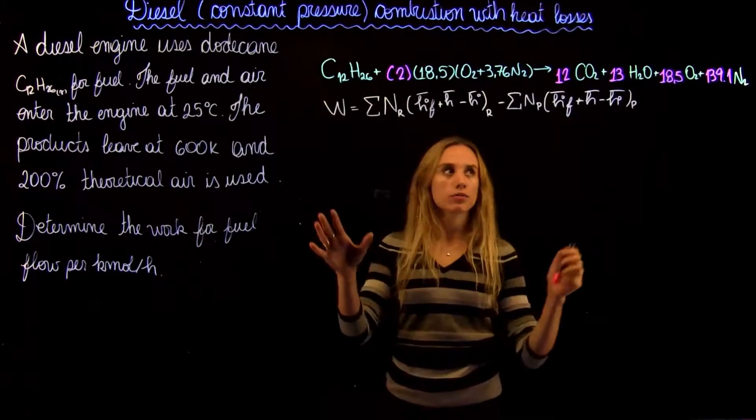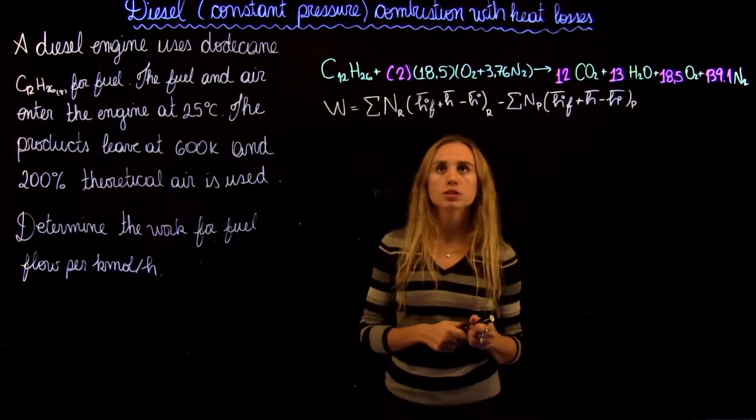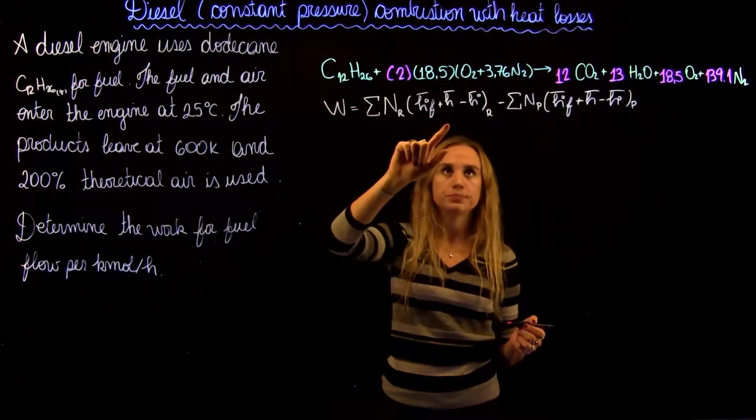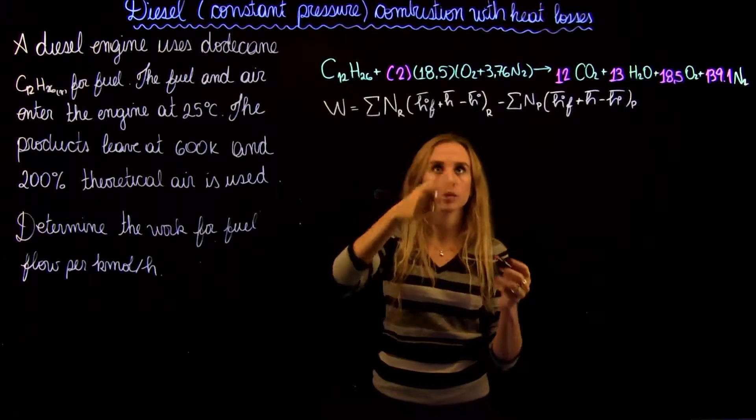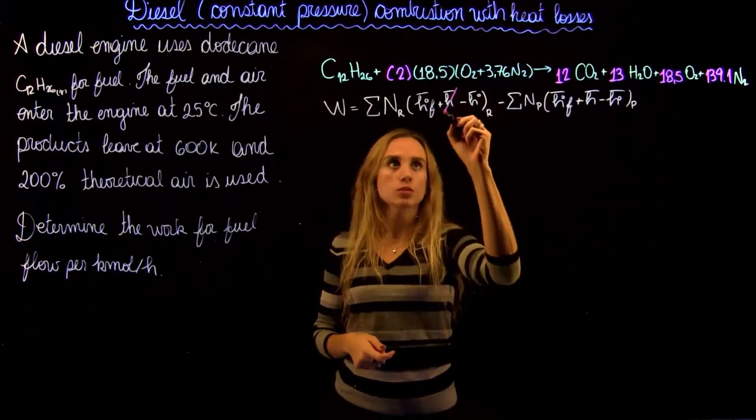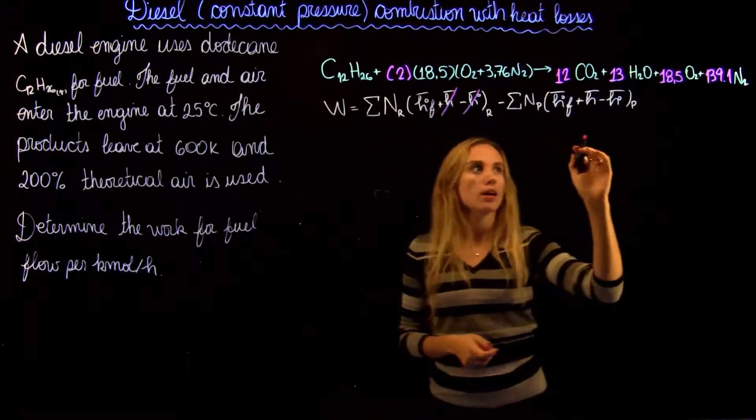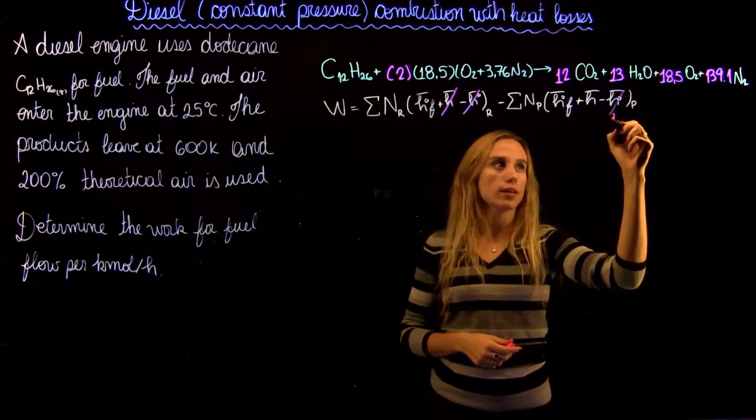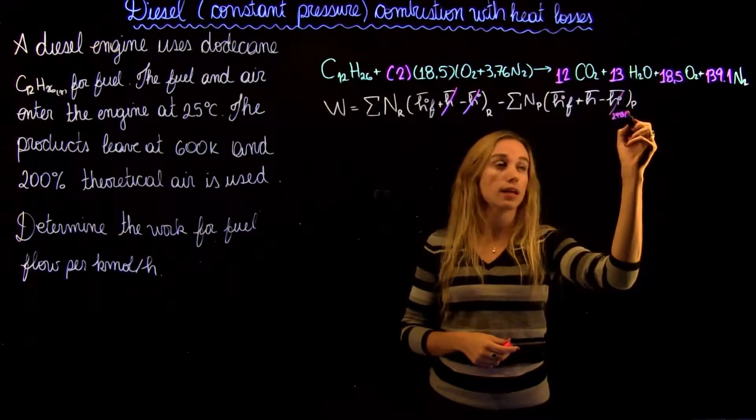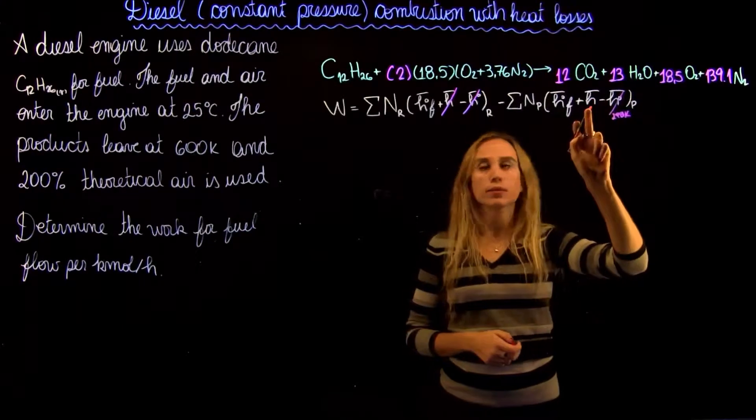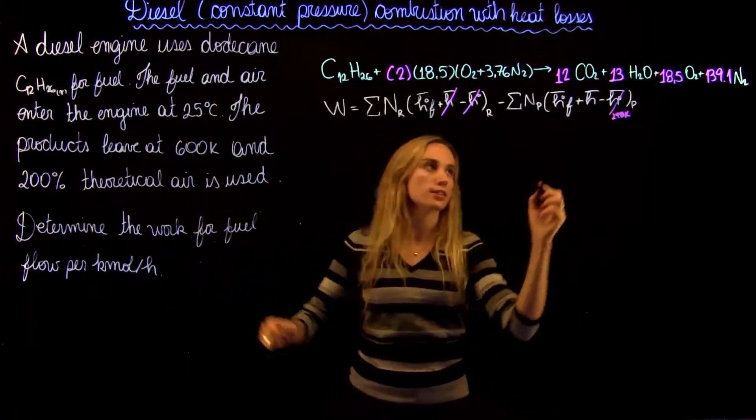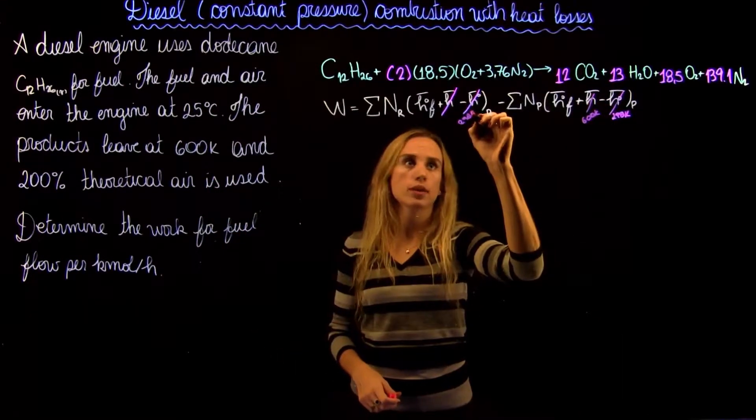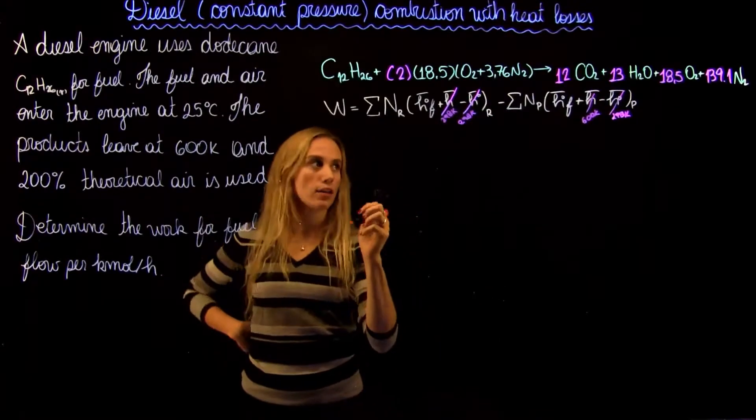So now we need to find the enthalpy for all the compounds. For our reactants, the reference temperature and the reaction temperature is the same at 298K, so these terms are going to cancel out. The reference temperature for the product is 298 kelvins and the product temperature is 600 kelvins. So now we have to find all the enthalpies.